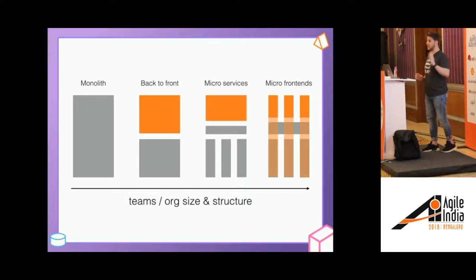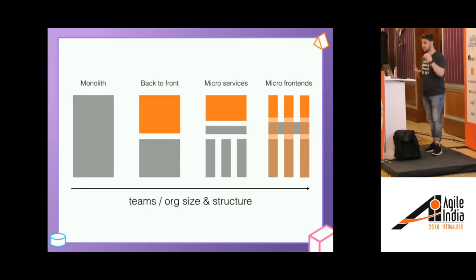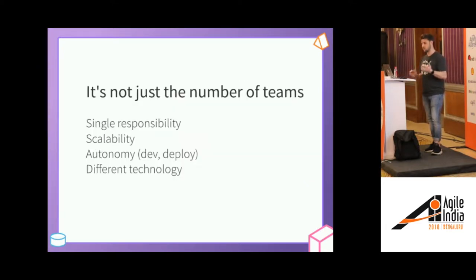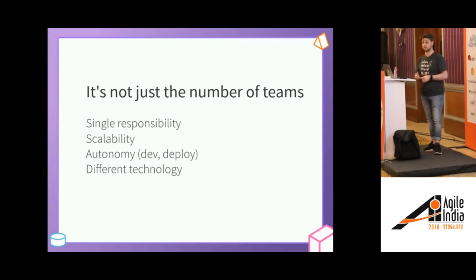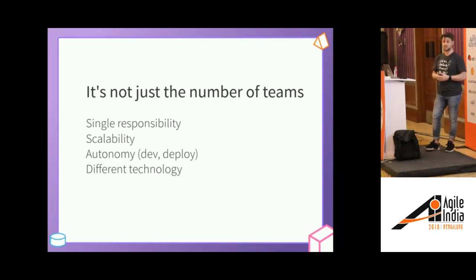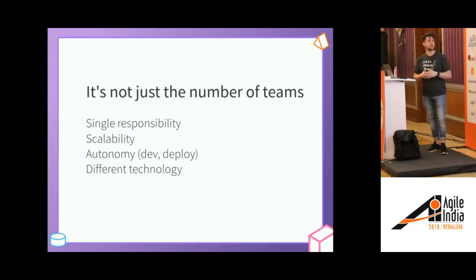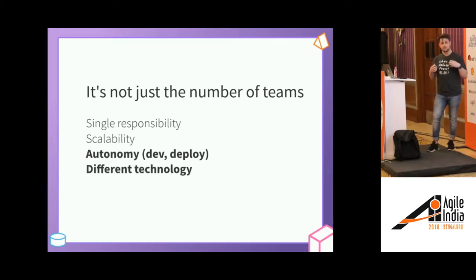Ideally you want a full vertical — as someone mentioned in earlier talks today — where teams have front-to-back end-to-end ownership of a feature. The principles are the same as microservices: single responsibility, scalability so you can scale specific parts of the frontend differently, and autonomy — how can you develop, test, and deploy that part of the frontend completely independently from other teams? And how can you use different technology — use one framework for one part and another framework for another part?